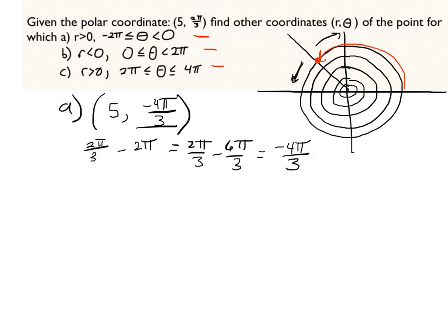B is slightly different. In B, our new radius is less than 0. So, when I write in my answer, I got negative 5, comma, some angle. But here's the issue. The issue is that at negative 5, 2π over 3, I'd be down here where that x is.